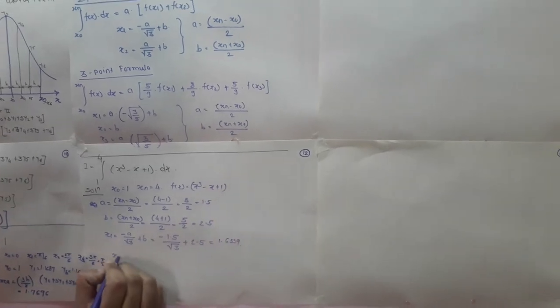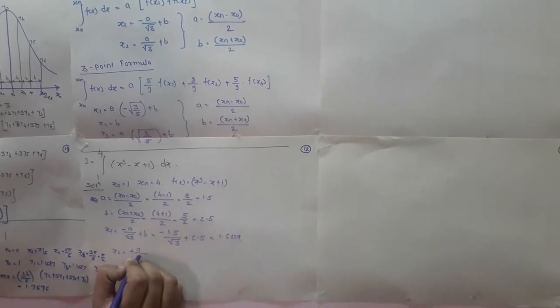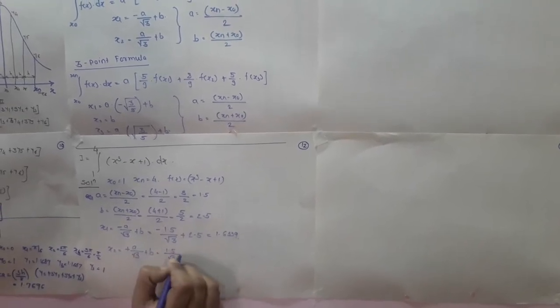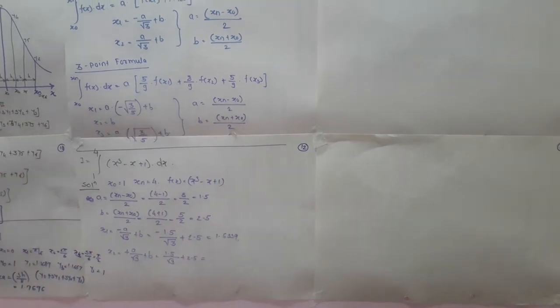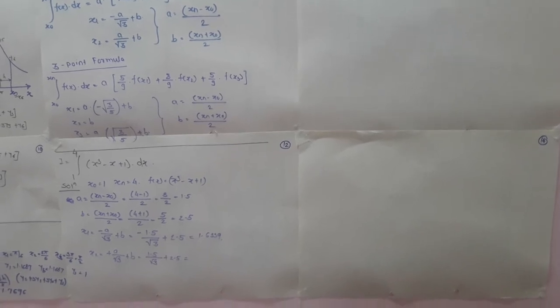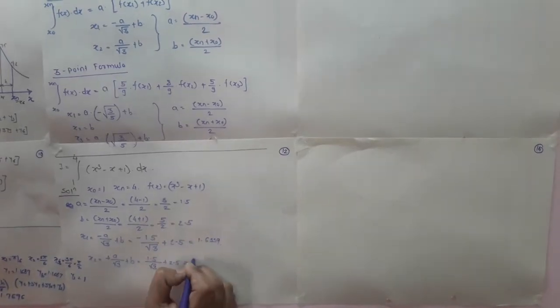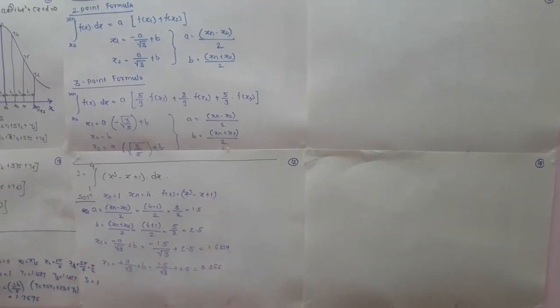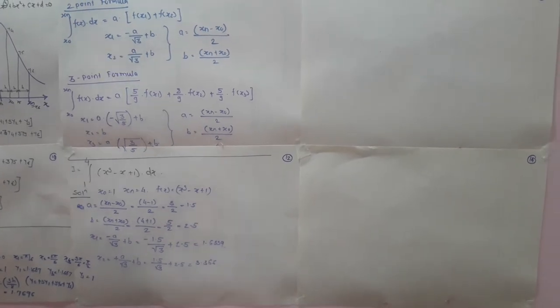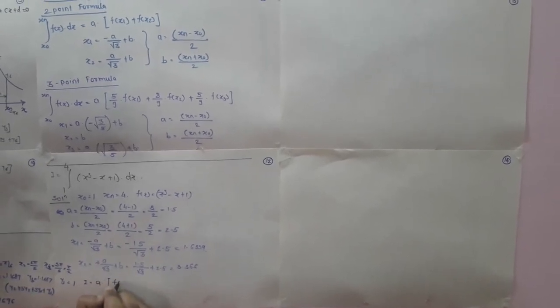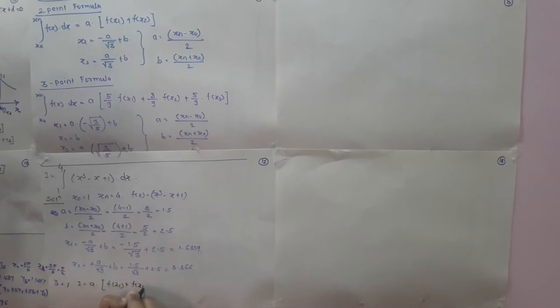And x2 equals plus a divided by root 3 plus b, that is 1.5 divided by root 3 plus 2.5, which gives x2 equal to 3.366. Now that we have evaluated x1 and x2, we substitute into our formula: the integration equals a into f(x1) plus f(x2).